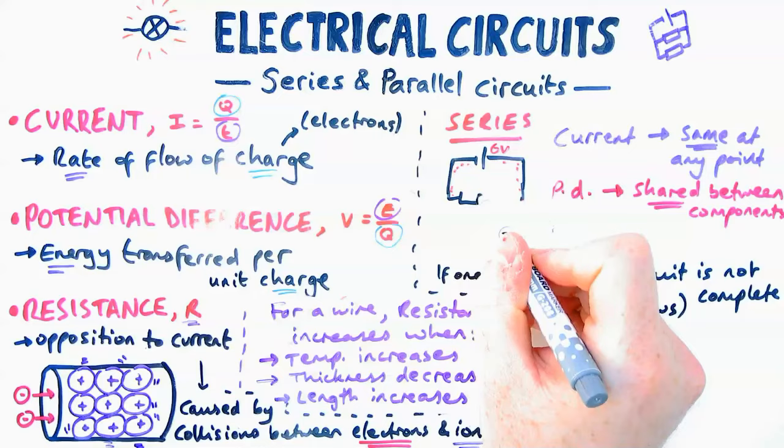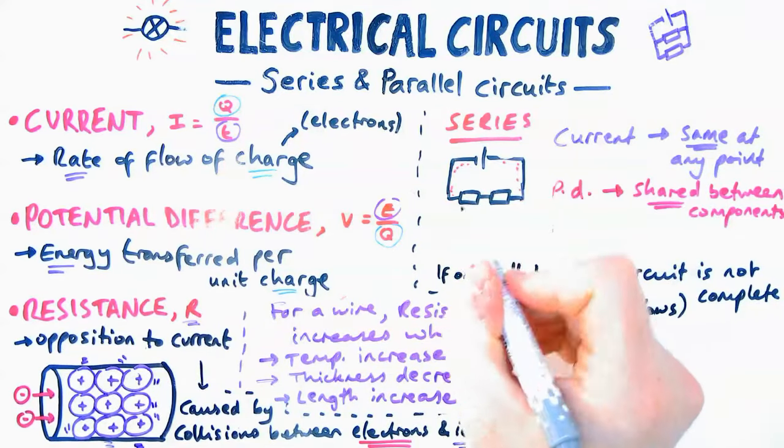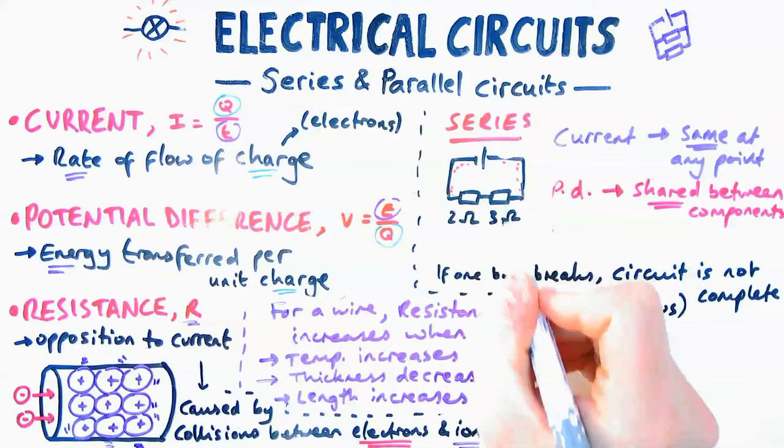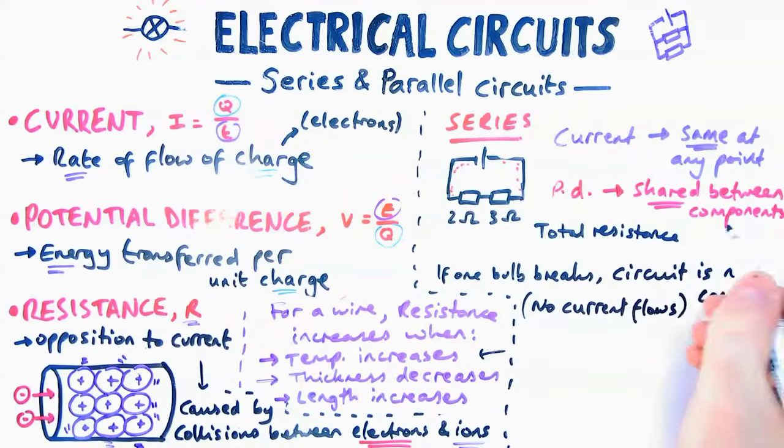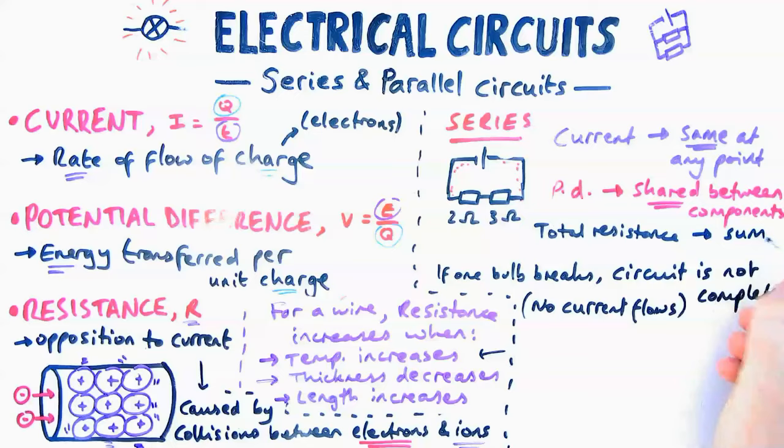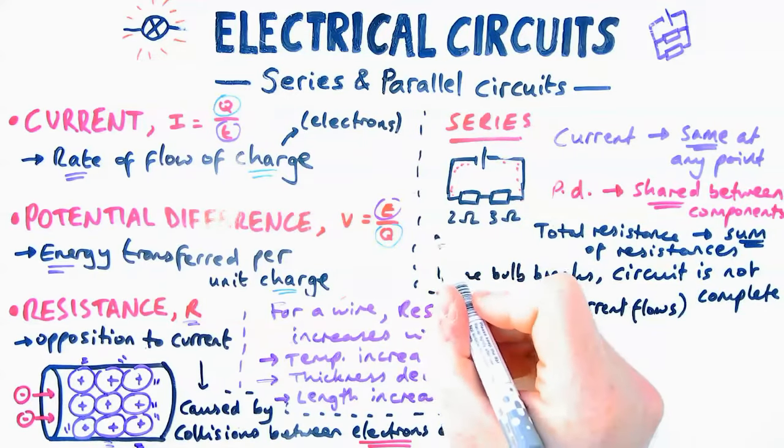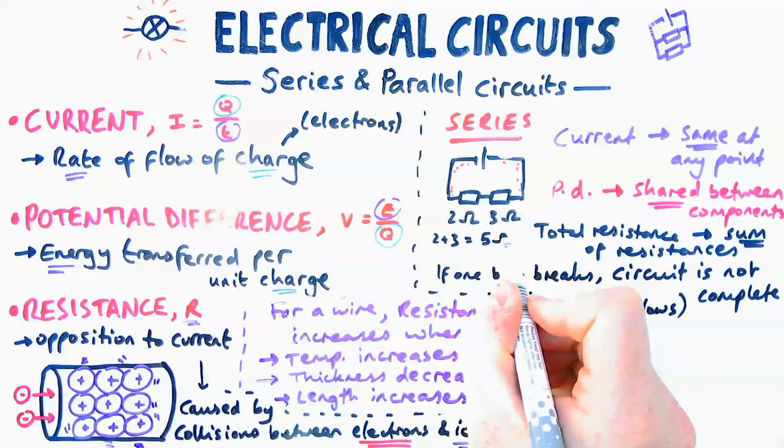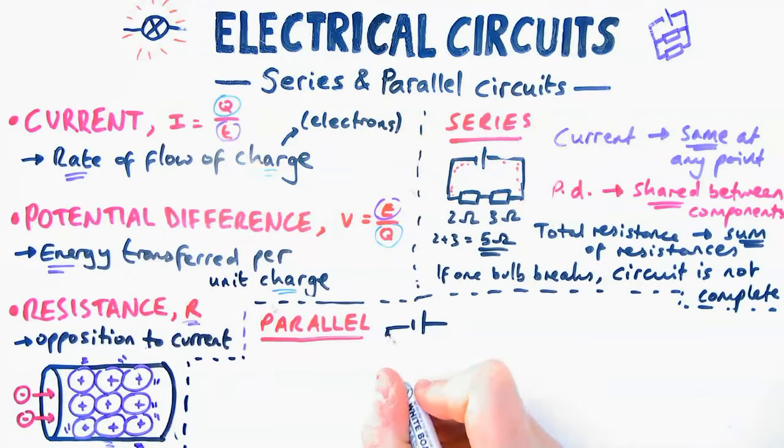Now if I was to change these bulbs to resistors, and I was to describe how resistance changes in a series circuit, let's say I've got two ohms and three ohms, the total resistance, because there's one path for the electrons to take, the total resistance you just add them together. So it's the sum of the resistors, or the resistances. So in this case, that means two plus three gives you five ohms, because the electrons go through both resistors.